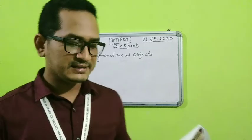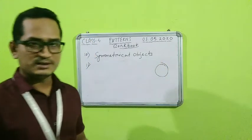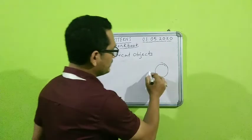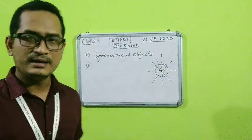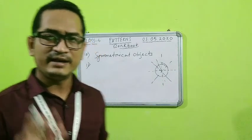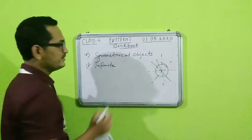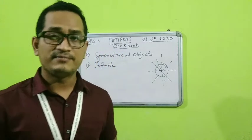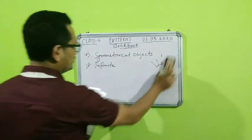Number 11: how many axes of symmetry does the given object have? We will consider the figure given is a circle. A circle can be divided into two identical parts in so many ways — like this, and like this. So a circle will have an infinite number of lines of symmetry. The answer for number 11 is infinite.